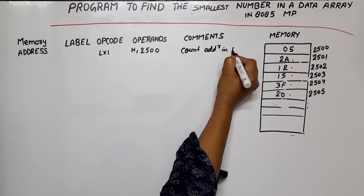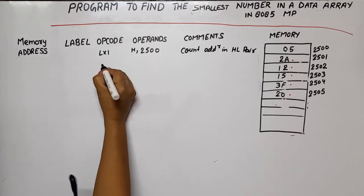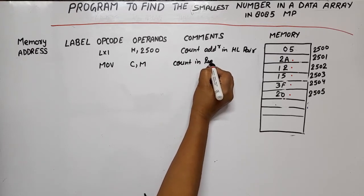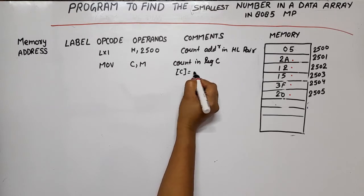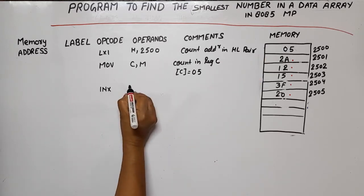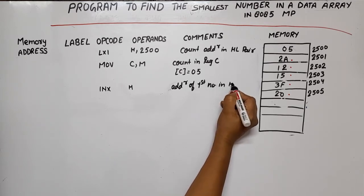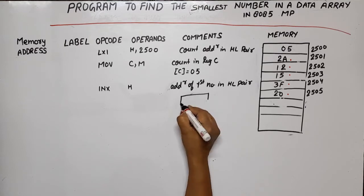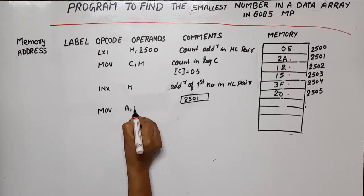First, we use LXI H with the count address in HL pair. Now we have the count address. We load count into register C using MOV C,M. According to this program, the count value is 05, so the content of C becomes 05. Then we load the address of the first number in HL pair. In this case, the HL pair value becomes 2501.